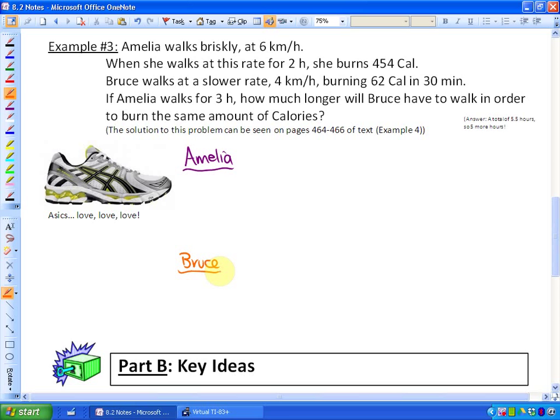Alright, so at this point we know that Amelia, if she was walking for two hours, she burns 454 calories, so I'm just going to set that up as something that we know. So she would burn 454 calories in two hours, but we would like to know if Amelia walks for three hours. So let's go ahead and find out. So our goal for Amelia is to find out how many calories she would burn in three hours.